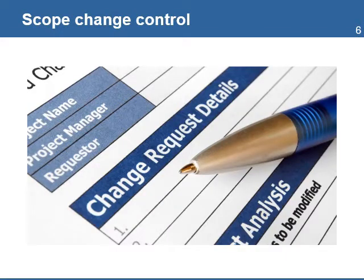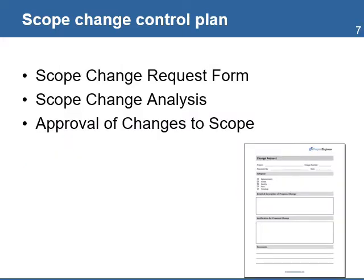The Scope Change Control Plan defines the process to request changes, analyze the change, approve the changes, update the project plans, and communicate the changes to all the stakeholders. It includes the people responsible for approving the changes, especially when the change will incur additional cost. The purpose of this plan is to minimize scope creep, which is the natural tendency of all projects to add work that is not authorized or budgeted for. The plan includes the Change Request Form, used to document any requests for scope changes coming from any project stakeholder, especially the donor or the beneficiaries.